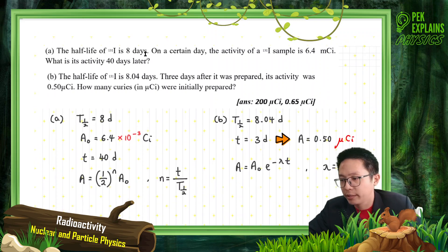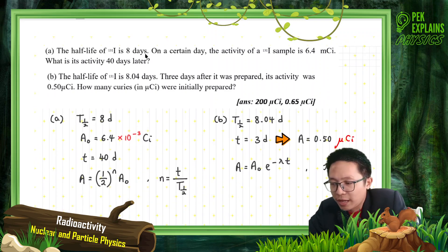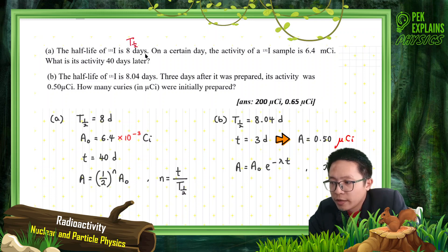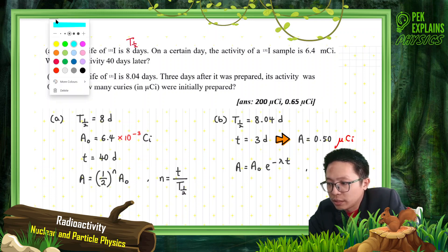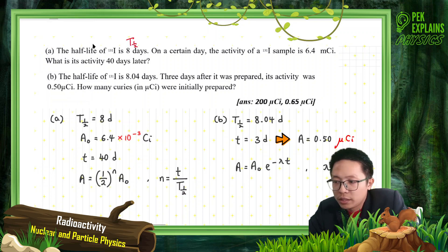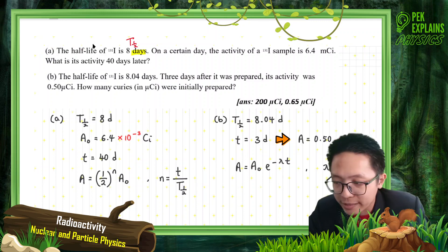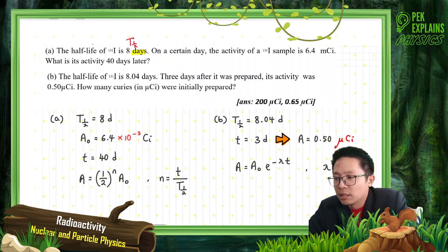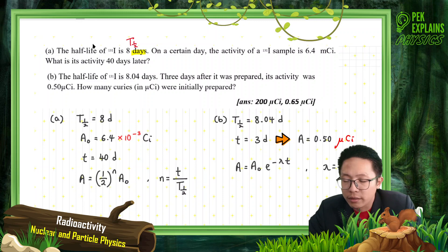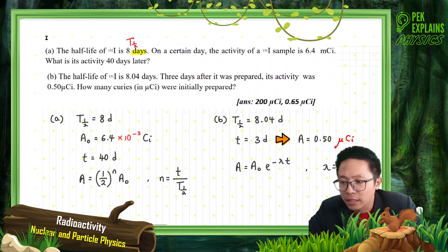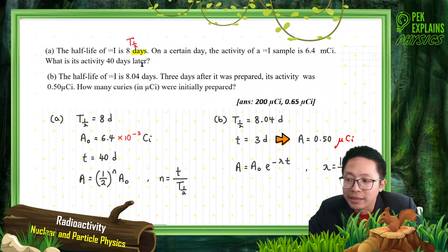What is provided? The half-life is given here — pay attention to the unit, which is in days, not the SI unit. He also gives us the activity on a certain day. What about the activity 40 days later?